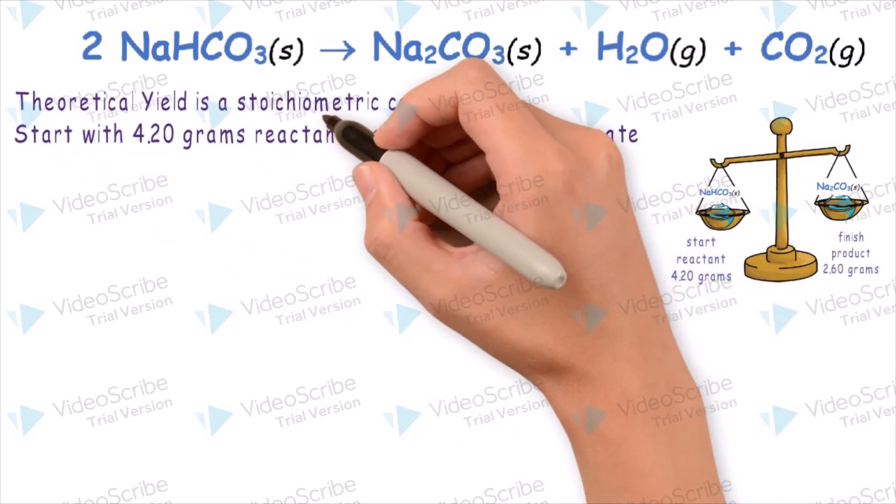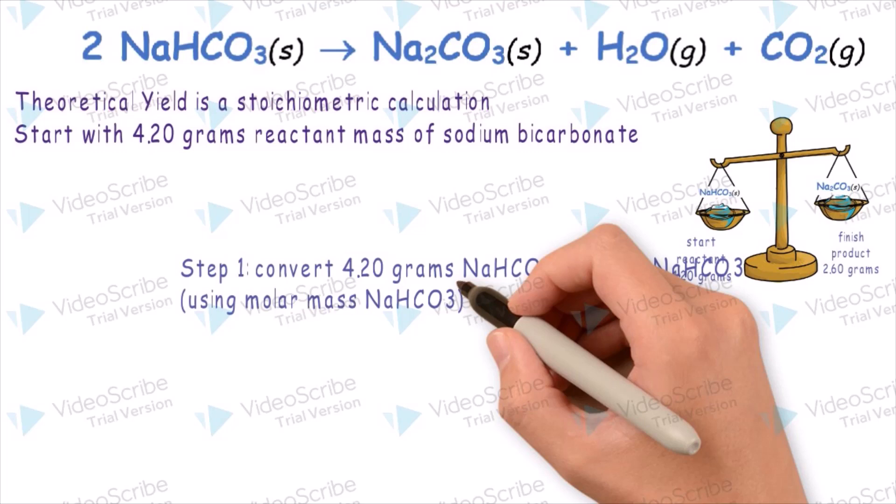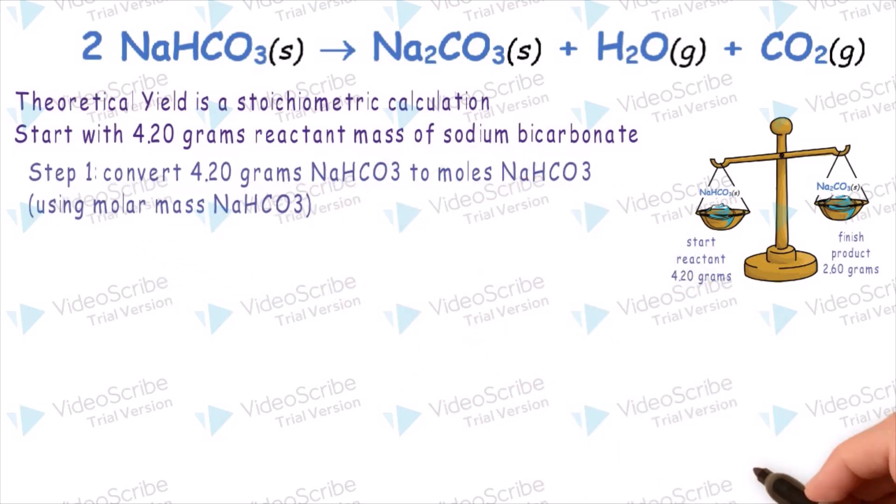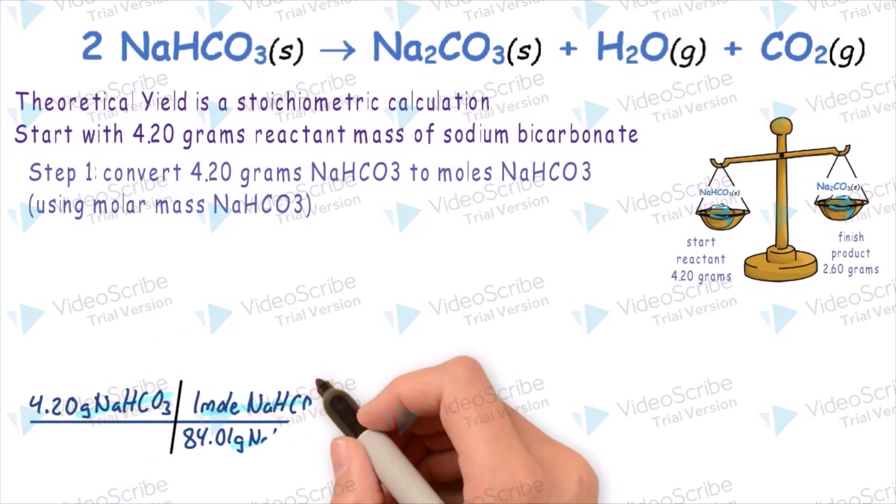Theoretical yield is a stoichiometric calculation. We're going to start with the 4.20 grams of the reactant mass of the sodium bicarbonate. Step 1 is to convert 4.20 grams of the sodium bicarbonate to moles of sodium bicarbonate by using the molar mass of sodium bicarbonate.